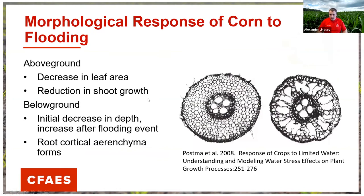When we see waterlogging in corn, we can see changes in morphology. The plant will decrease its leaf area and reduce shoot growth. Below ground, we see an increase in root depth after flooding events end. Part of that may be driven by the formation of cortical aerenchyma — essentially large pockets within the root system. Corn kills off the root parenchymal tissue so it doesn't have to maintain those cells metabolically, freeing up oxygen and resources to explore more after the flooding event.